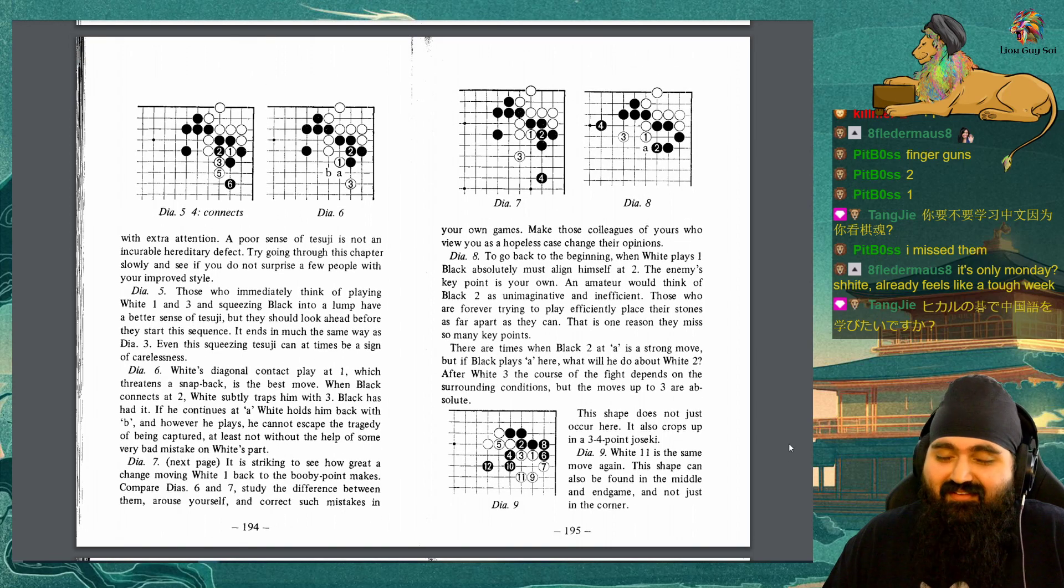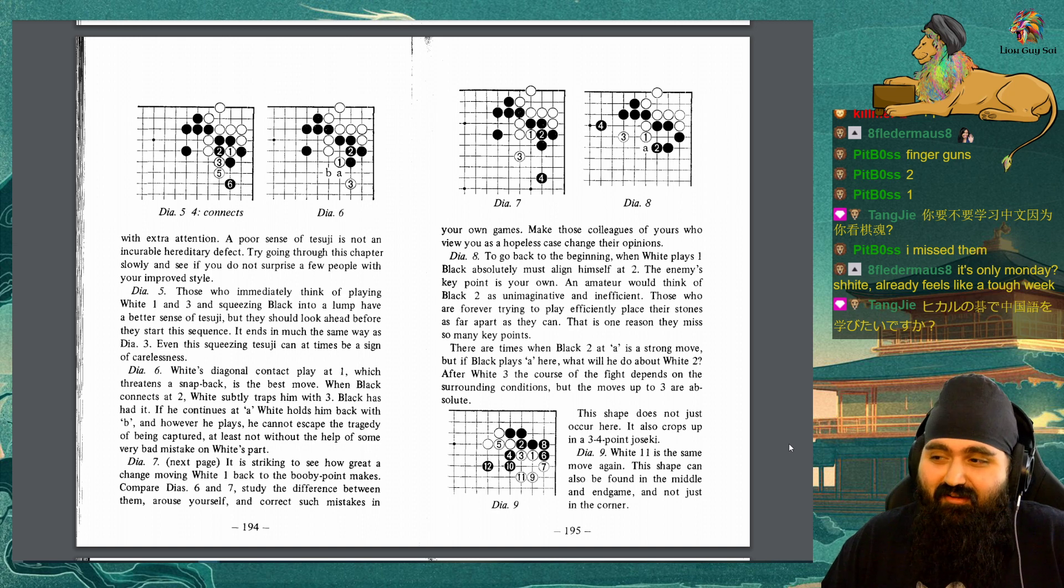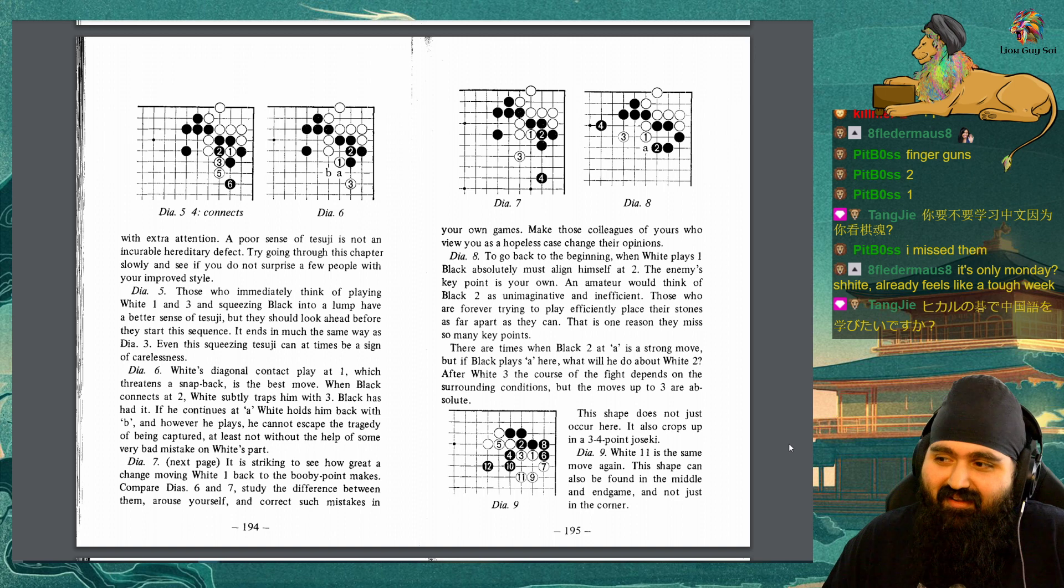A poor sense of tesuji is not an incurable hereditary defect. Try going through this chapter slowly and see if you do not surprise a few people with your improved style. Diagram 5: Those who immediately think of playing white 1 and 3 and squeezing black into a lump have a better sense of tesuji. But they should look ahead before they start this sequence. It ends in much the same way as Diagram 3. Even this squeezing tesuji can at times be a sign of carelessness.